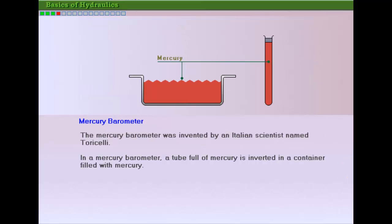An Italian scientist named Torricelli invented the mercury barometer, a device to measure the atmospheric pressure in inches of mercury. The mercury barometer works as follows.